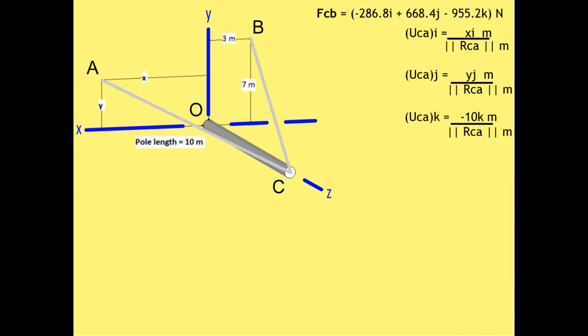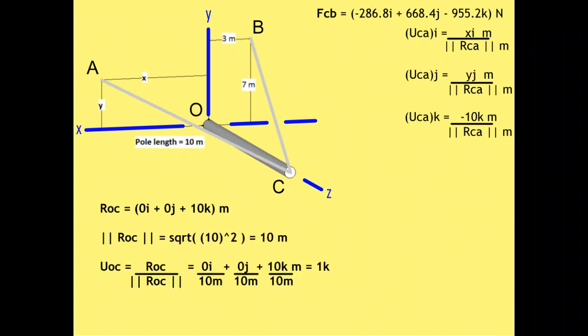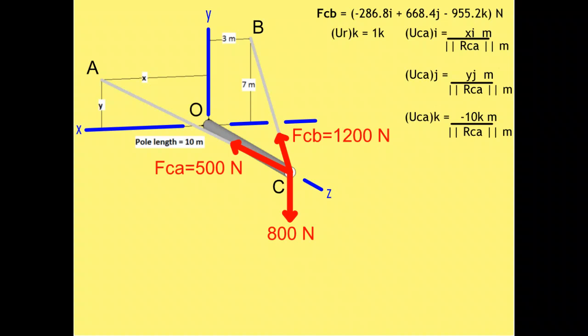I'll put those values in my inventory in the upper right corner of the video. Lastly, we define vector ROC and its magnitude, which allows us to compute UOC — the resultant force position vector. In order for this to exist in equilibrium, the sum of the forces in each direction must equal zero. The forces in each direction are comprised of their corresponding force components. Summing the forces in the x direction and setting them equal to zero, we get negative 286.8 newtons from vector FCB's I component, plus 500 newtons times vector UCA's I component, plus the resultant force times vector UR's I component, set equal to zero.